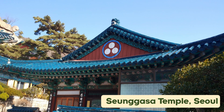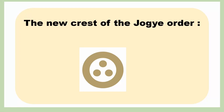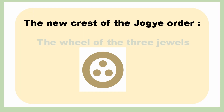But now, the symbol was changed to a new one in 2005. You will find this symbol on the gable of a Buddhist building. This is the new crest of the Jogye Order of Korean Buddhism. The Jogye Order is the biggest denomination of Korean Buddhism, with over 2,800 Buddhist temples in South Korea. The reason for changing the crest was that the swastika was used not only by Buddhist temples but by shamans and other cults. In addition, the extremely negative image of the swastika imprinted by the Nazi party affected the decision. The name of the new crest is the Wheel of the Three Jewels.